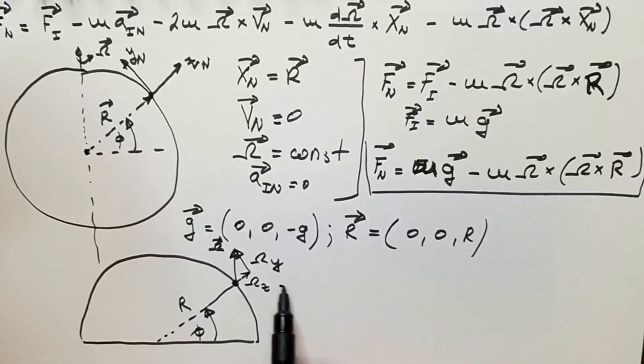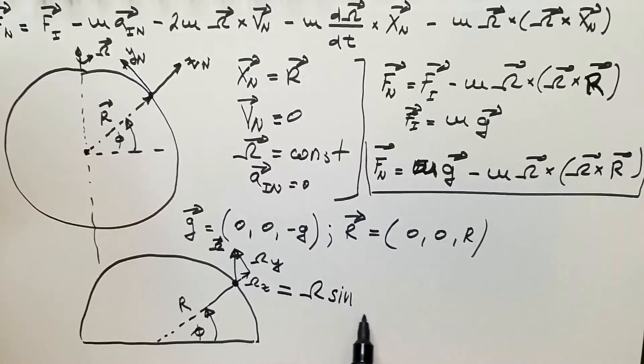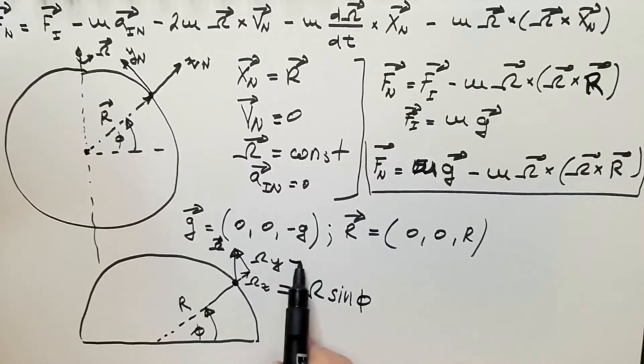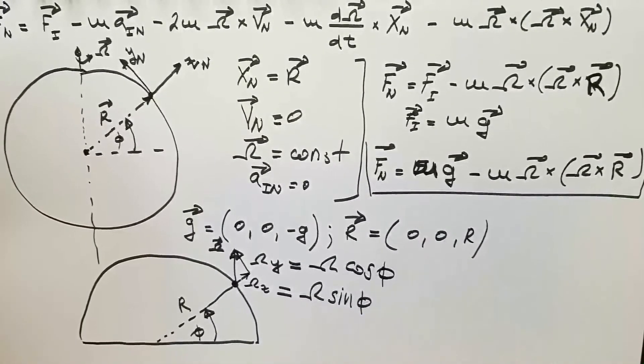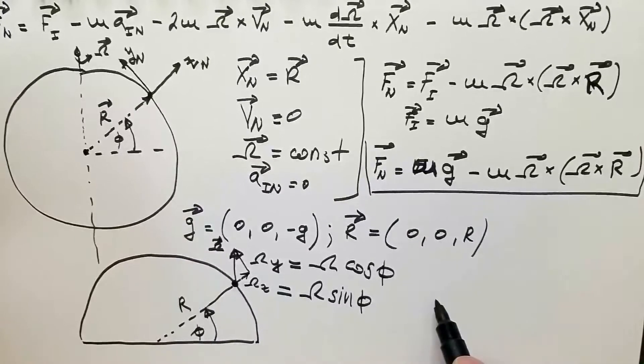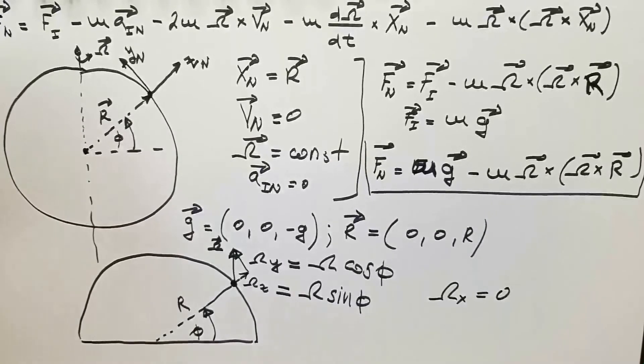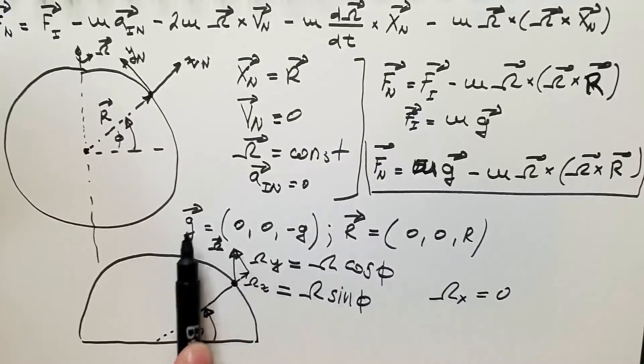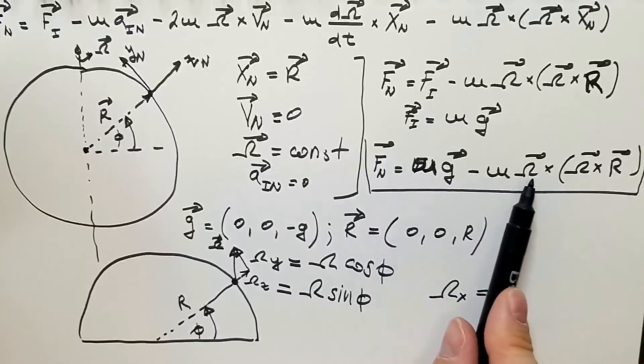Which means that omega_z component is omega sine phi, and omega_y is omega cosine phi, and as I just said, omega_x is equal to zero. Namely, there is no X component of the omega vector. Now, when I know components of omega, I know components of G, and I know components of R, I can go ahead and calculate this triple vector product, and I will do that on the next page.